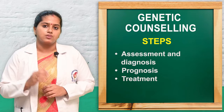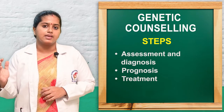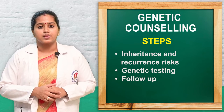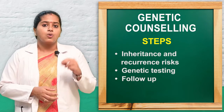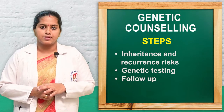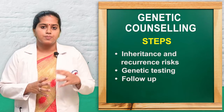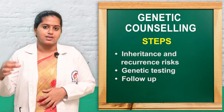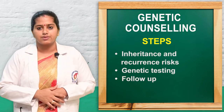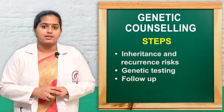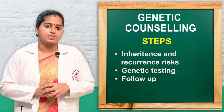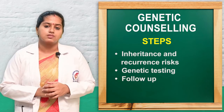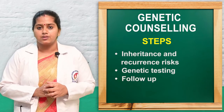Step three is treatment modalities: detailed information about available treatments for the particular disease is provided. Step four is genetic recurrence: information about the transmission of inherited diseases — whether the risk passes from father to child, from couples to the next generation, or whether a subsequent child can be affected — is clearly given. Step five is genetic testing: information about available genetic tests and gene therapies is provided to family members or individuals.